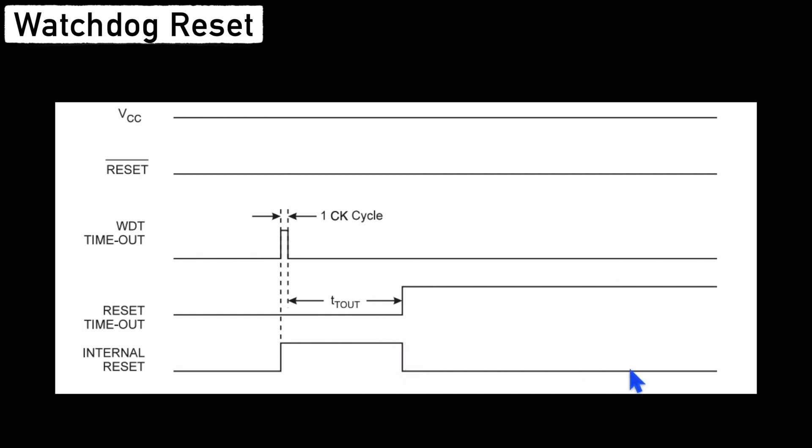The purpose of the Watchdog timer reset is to avoid any hang scenario. Suppose execution has halted somewhere, or is running in a while loop and not performing any other task. In that state, the Watchdog reset will be performed and it prevents hang scenarios. This was a quick brief about different kinds of resets performed on a microcontroller. Let's continue and implement this Watchdog reset for our microcontroller in the next session.